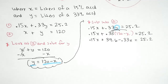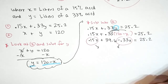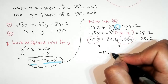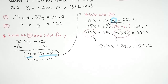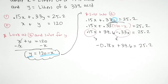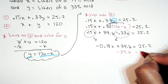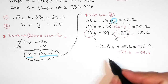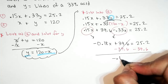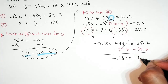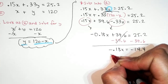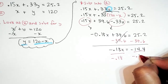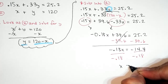Combining like terms: 0.15x minus 0.33x gives us negative 0.18x. Bring down the rest of the equation. To isolate the variable term, the opposite of addition is subtraction: subtract 39.6 from both sides, giving us negative 0.18x equals negative 14.4. Divide both sides by negative 0.18, and that gives us x equals 80.